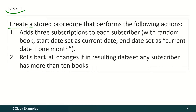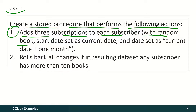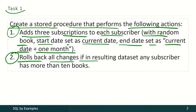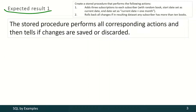In the first task we have to create a stored procedure that performs the following actions. First it should add 3 subscriptions to each subscriber with a random book, start date set as current date and end date set as current date plus 1 month. Then it should roll back all changes if in the resulting dataset any subscriber has more than 10 books. The expected result is that the stored procedure performs all corresponding actions and then tells if changes are saved or discarded.